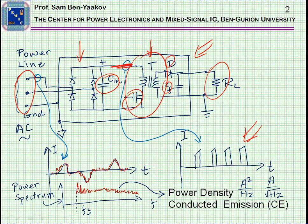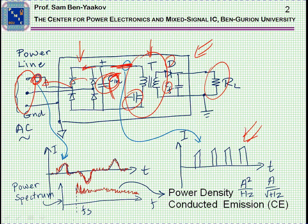Some of this ripple current or these pulses are actually shorted out by the capacitor. However, some of this ripple actually propagates and goes out and is fed to the power line. So if we look at a line here, we're going to see typically the low frequency component — the charging of the capacitor — which will be very typical for a capacitive type filter. However, superimposed on it, we're going to see this remnant of the high frequency component which still penetrates into the line.